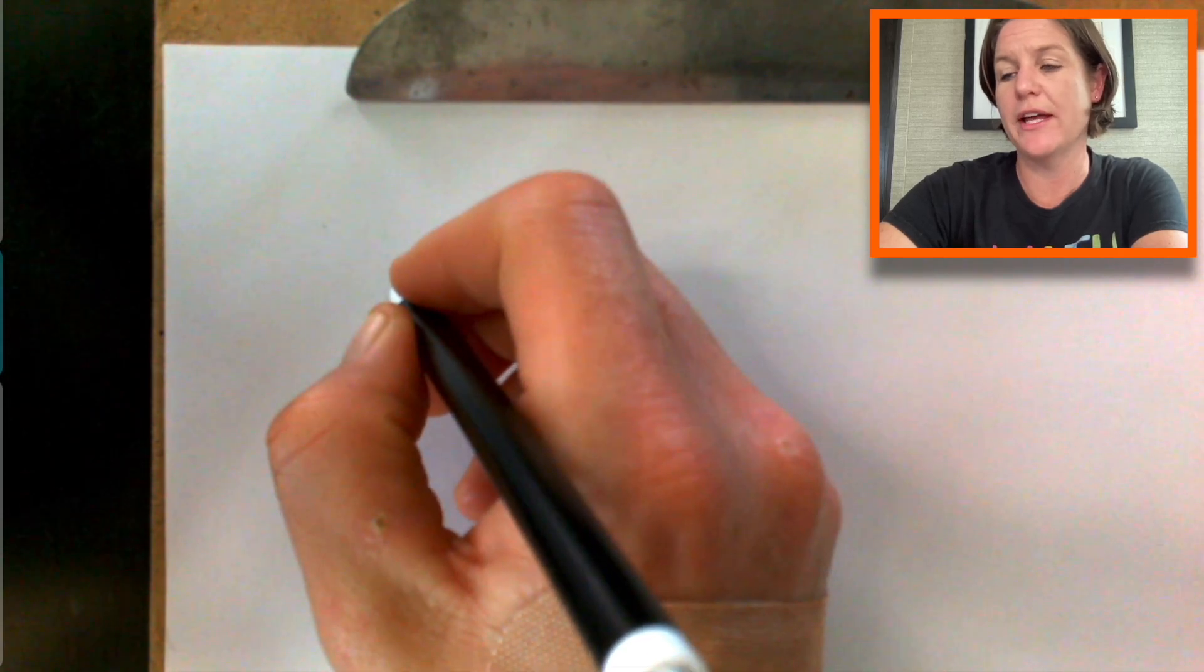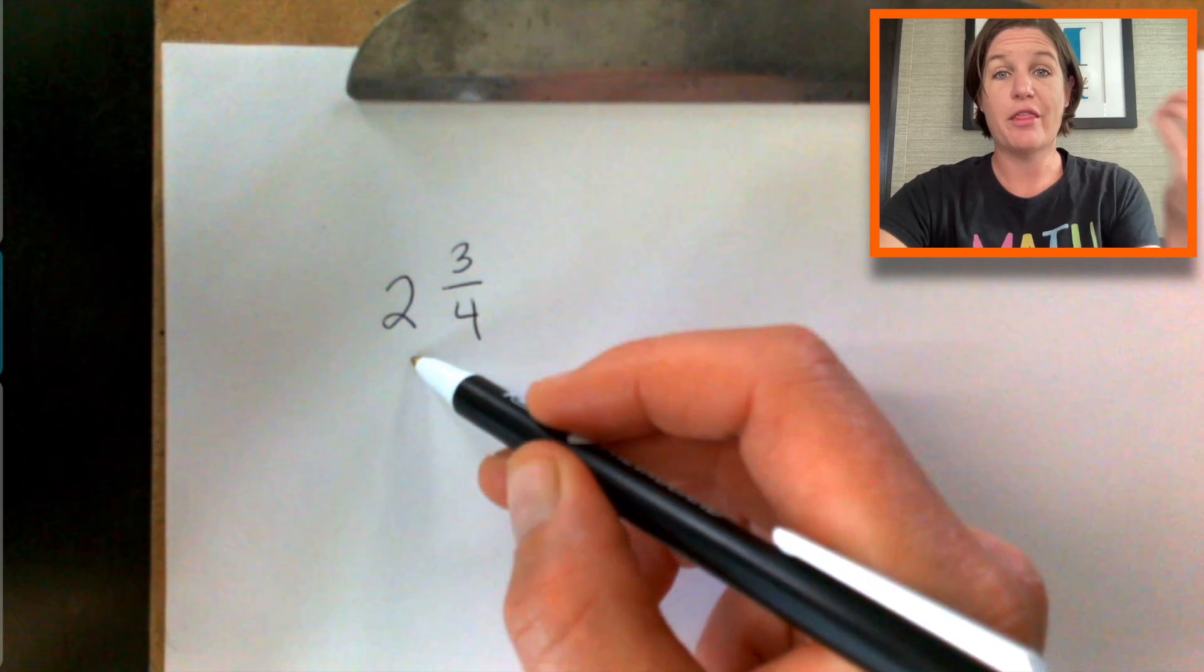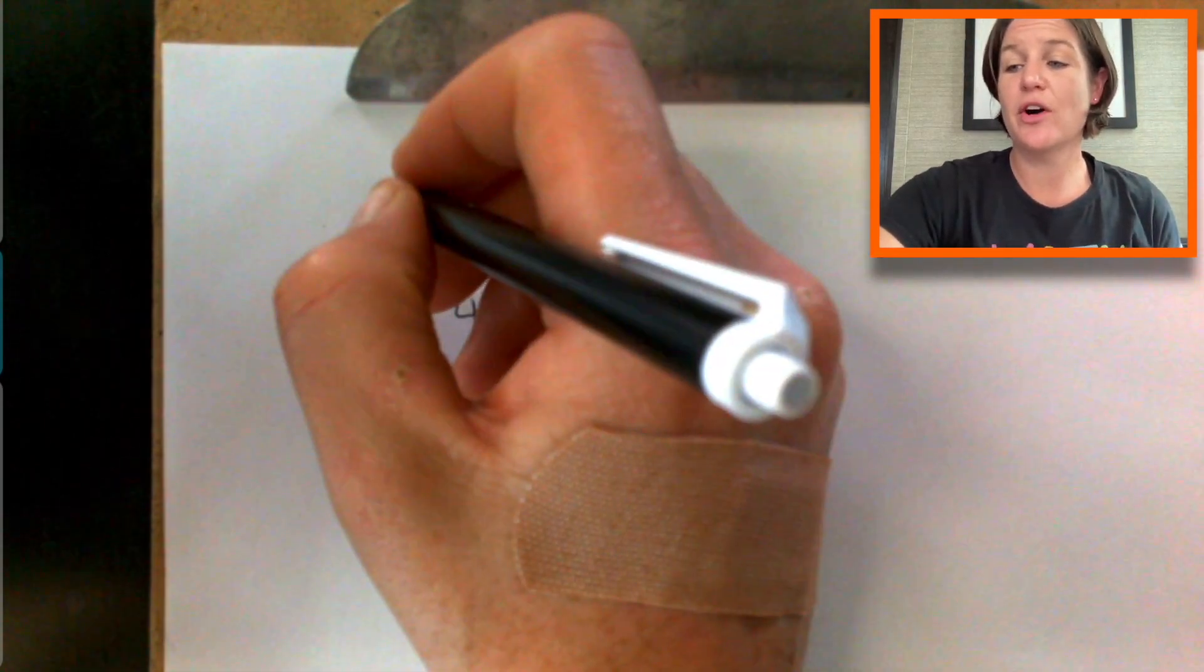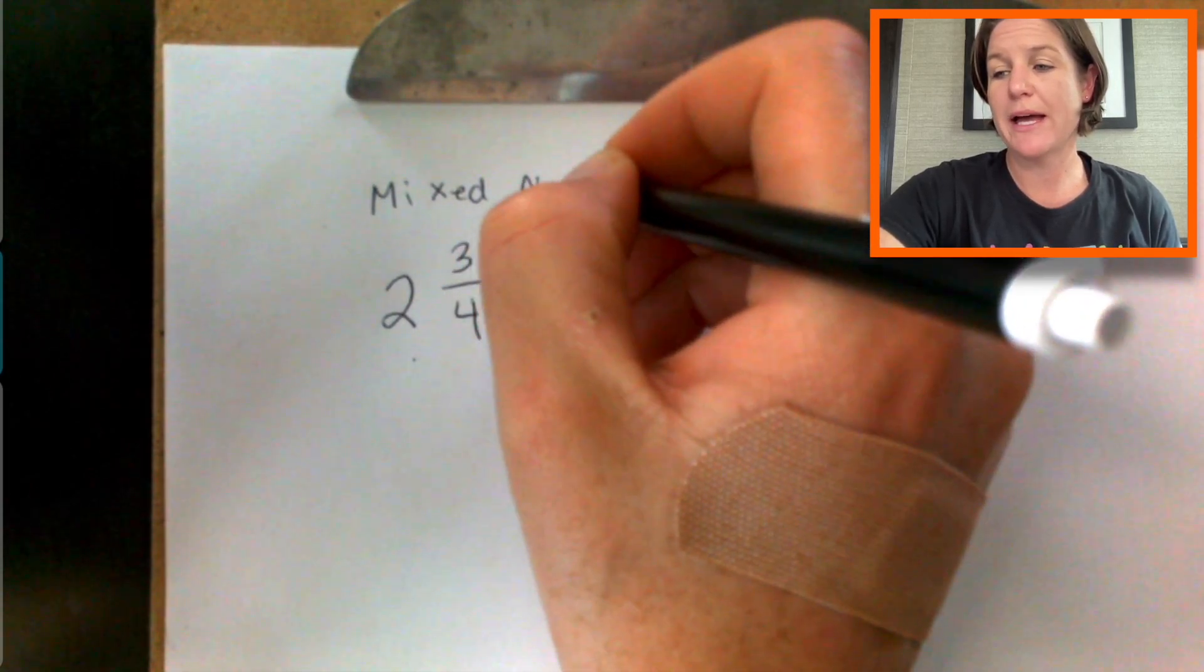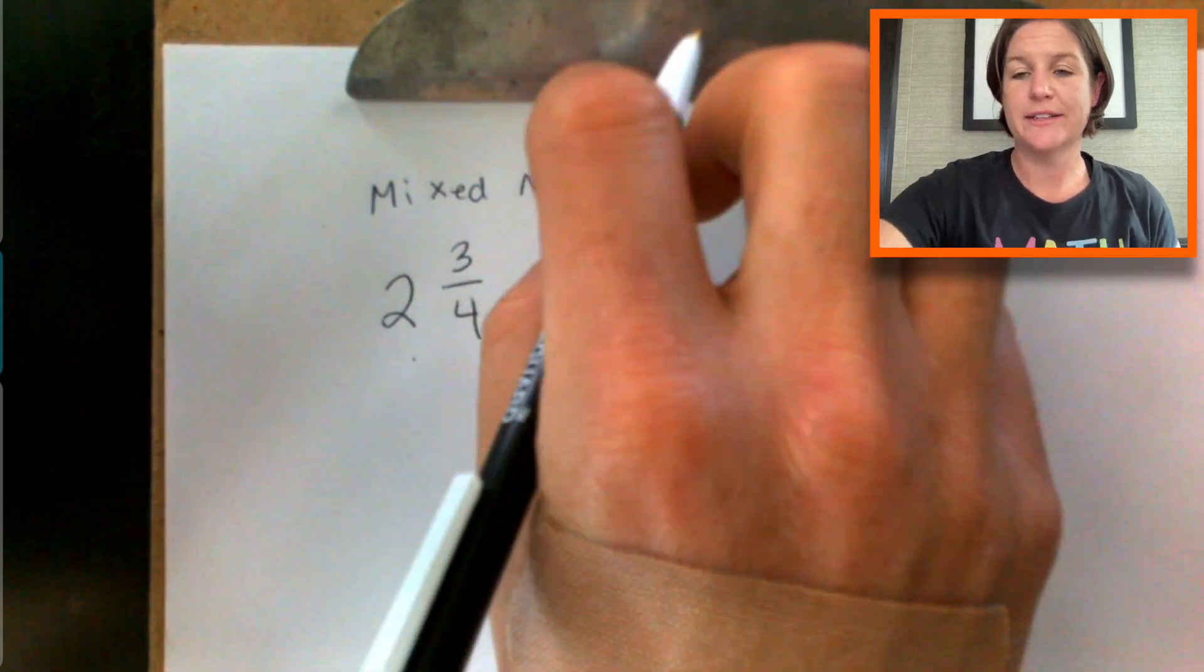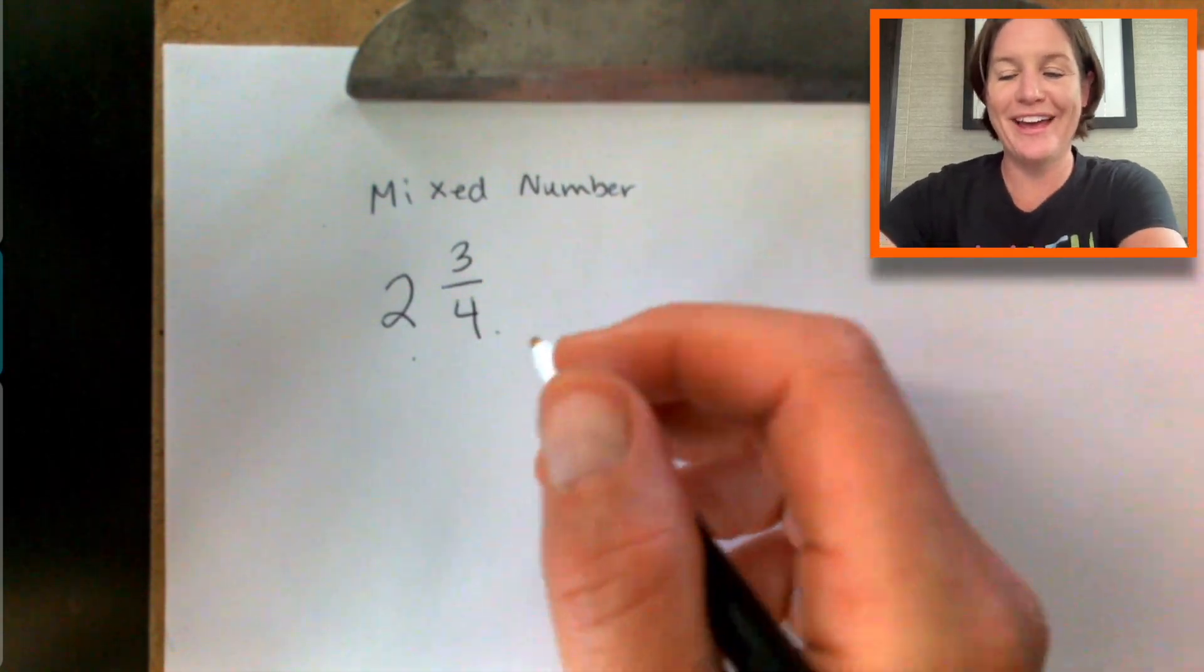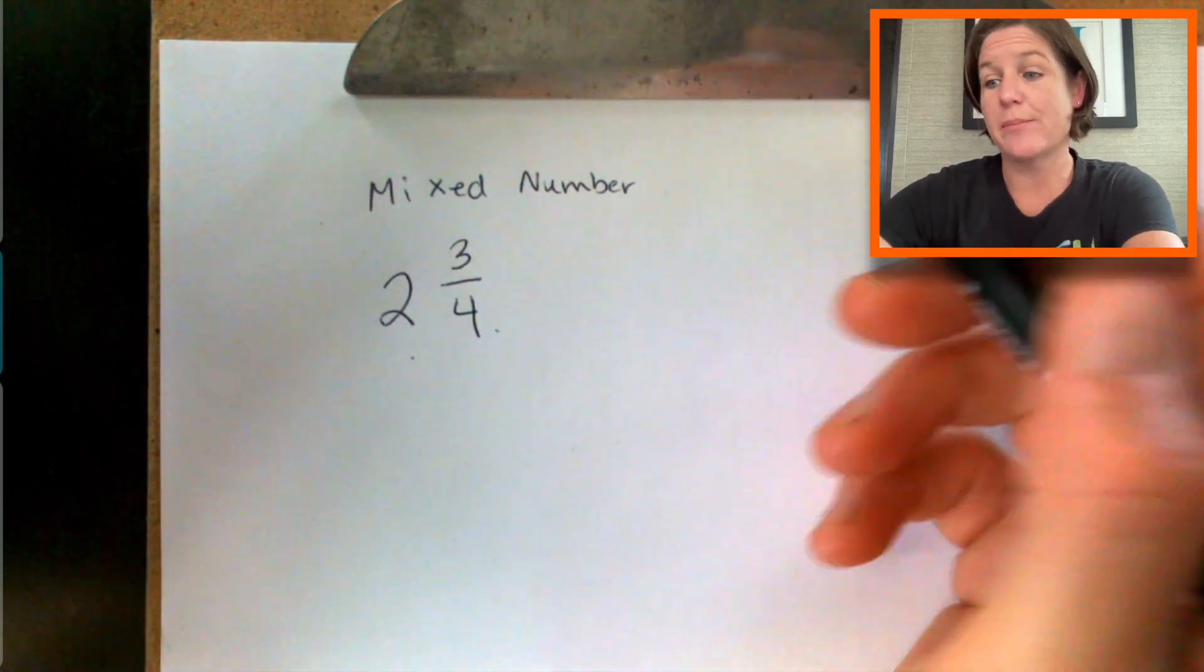Let's say that we have an example like this right there. We read this as two and three fourths. This kind of number is called a mixed number. I knocked my hand on a door, I'm so clumsy.